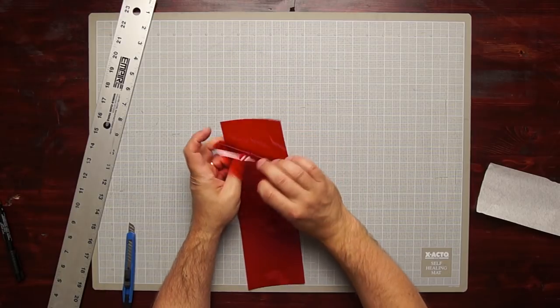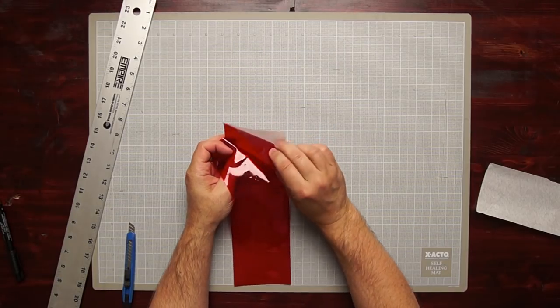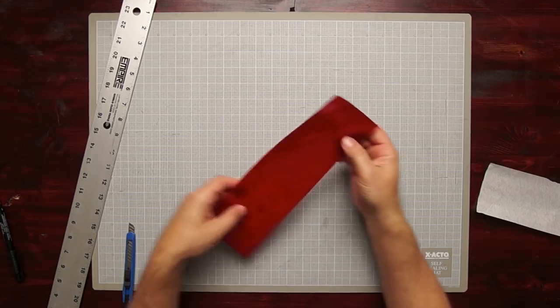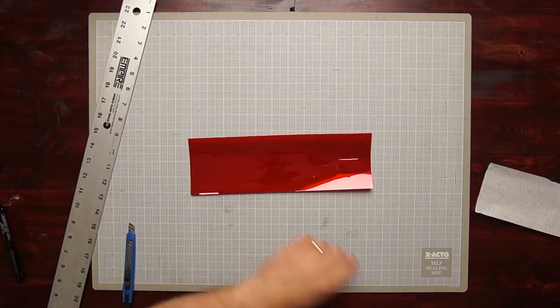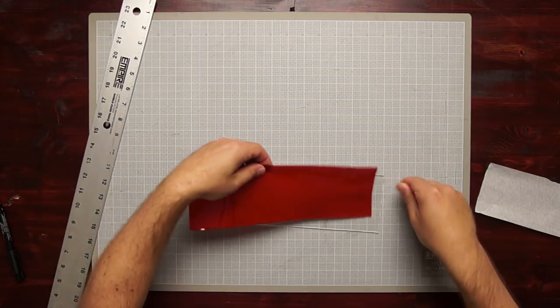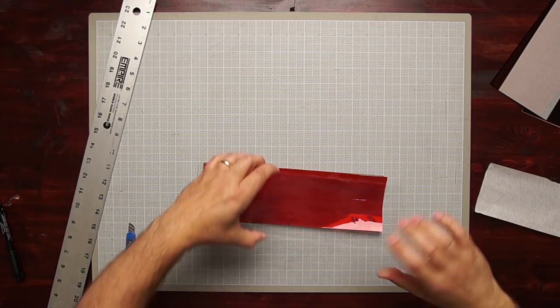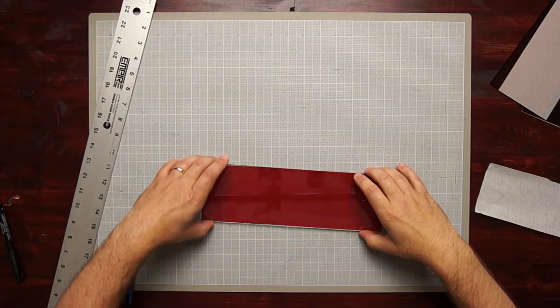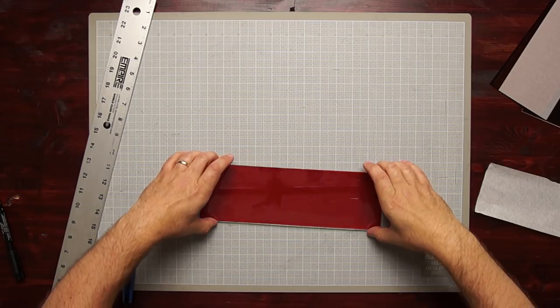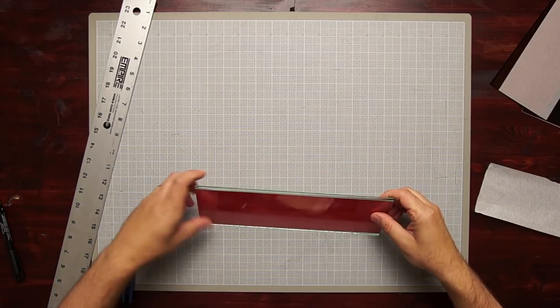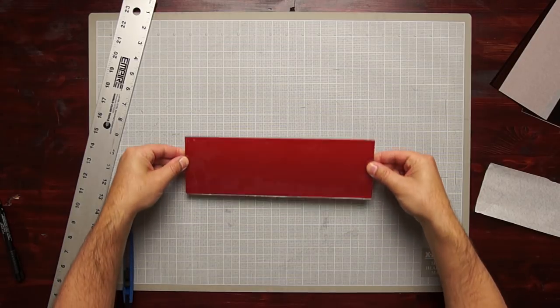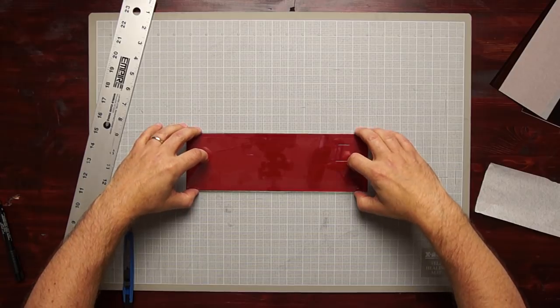So I now have two sheets of red, one sheet of the paper, and we're just going to sandwich this in. Try not to trim anything. Everything looks good there.